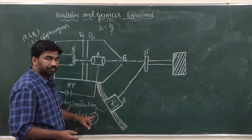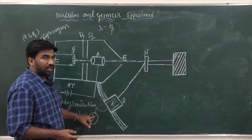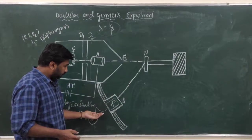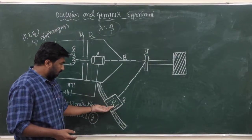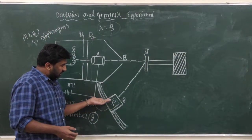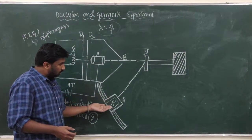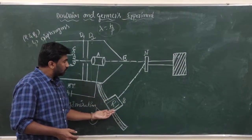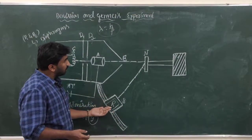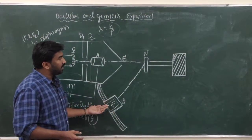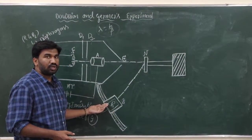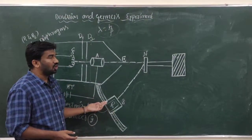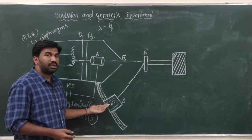Here we can record the current using the galvanometer. This experiment is performed by two methods: one is the normal incidence method and the other is the oblique incidence method.